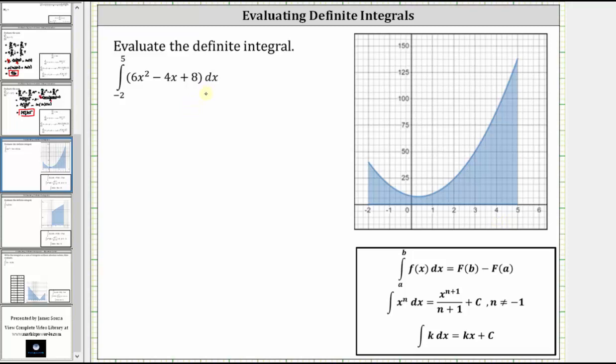To evaluate the definite integral, we need to determine big F of B minus big F of A, where big F is the antiderivative of the integrand function, where B is five and A is negative two. So let's begin by determining the antiderivative.